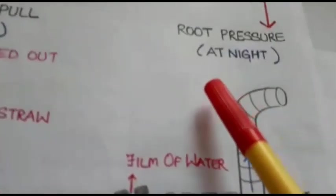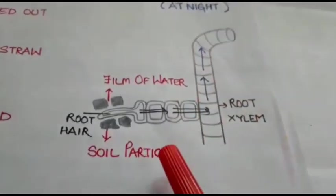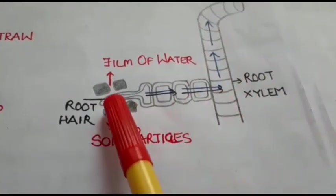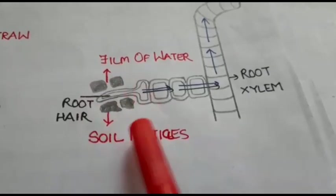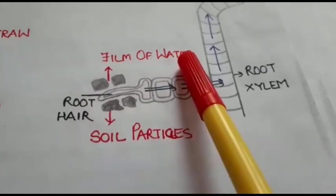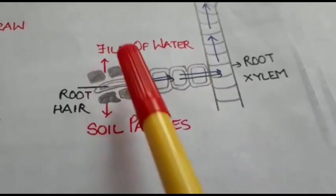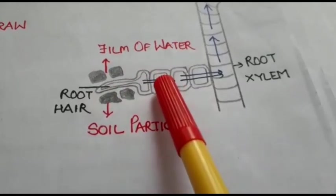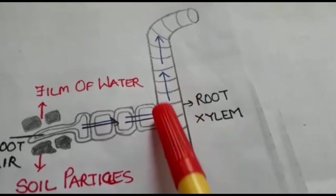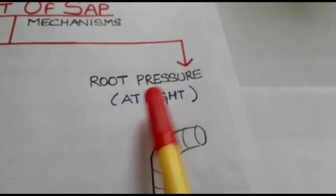The second mechanism, root pressure, which is operational at night, is nothing but the simple process of osmosis. As we know, the roots are in direct contact with the soil particles, and the soil particles have trapped between them very thin films of water. Because of osmosis, the water moves from the soil into the root hair, from the root hair to the adjacent cells, and ultimately it goes and joins up the root xylem. This is called root pressure.